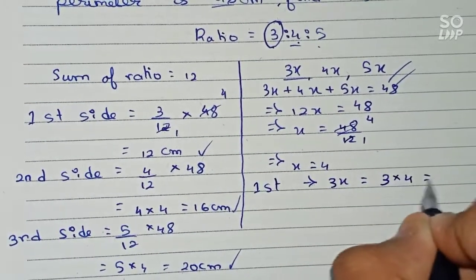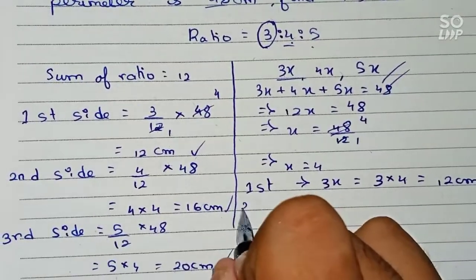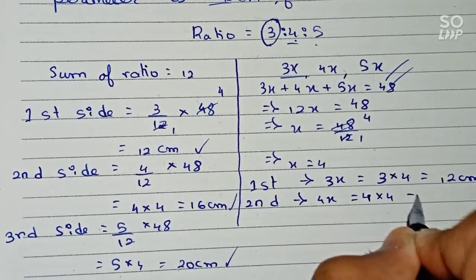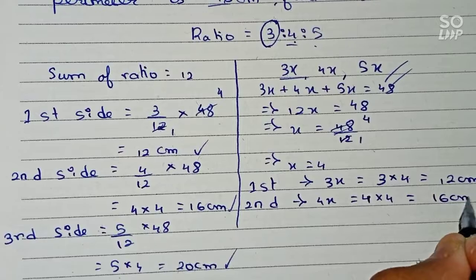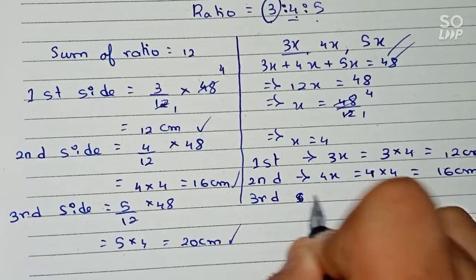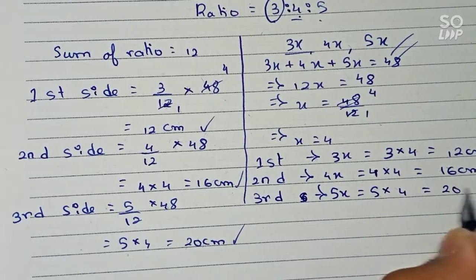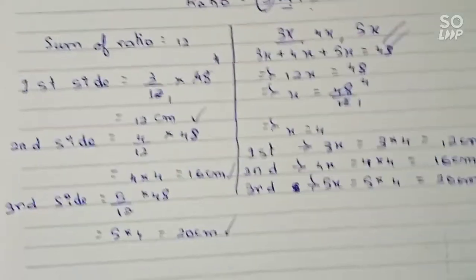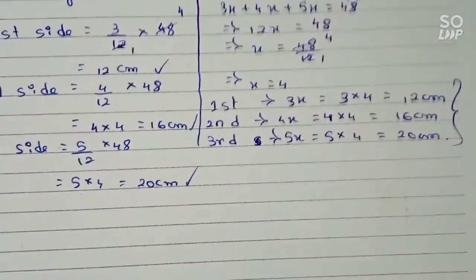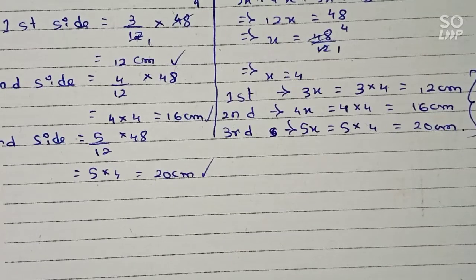So the first side is 3x = 3 × 4 = 12 centimeters, the second side is 4x = 4 × 4 = 16 centimeters, and the third side is 5x = 5 × 4 = 20 centimeters. From both processes we get the same result: 12 cm, 16 cm, and 20 cm respectively.